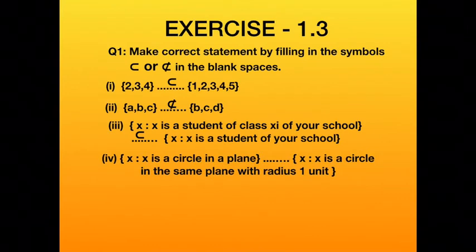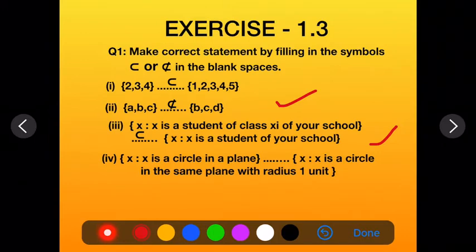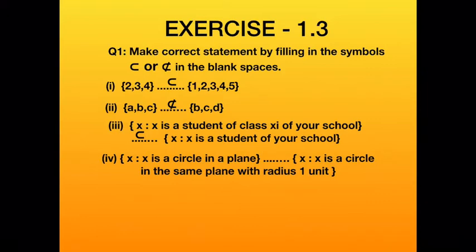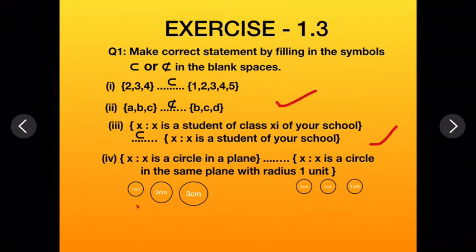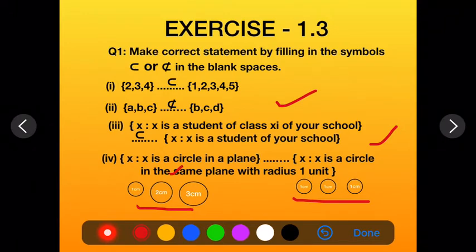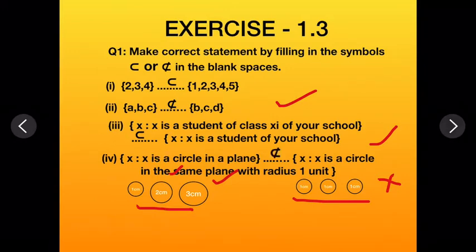The fourth part: the first set is {x : x is a circle in a plane} — circles of any radius, 1 unit, 2 units, 3 units, etc. The second set is {x : x is a circle in the plane with radius 1 unit} — only circles with radius 1 unit. Since the first set contains circles of 2, 3, 4 cm etc., which are not in the second set, the first set is not a subset of the second. In the blank, write: not a subset.